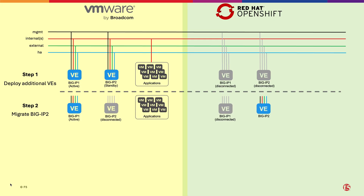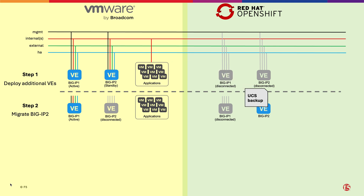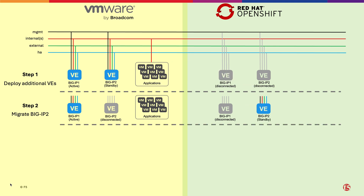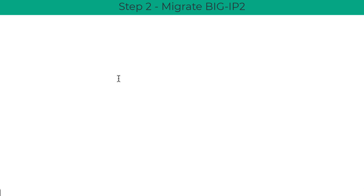Step 2 consists in replicating in OpenShift the configuration backup of BigIP 2 in VMware. In this stage, the BigIP cluster is formed by a VE in VMware and a VE in OpenShift. The steps shown next are detailed in the PDF guide.